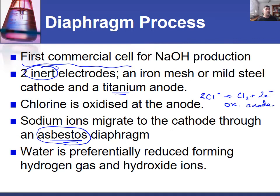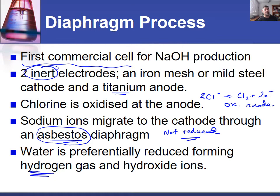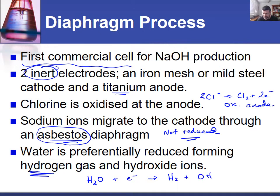Because there was no separation of the two processes this time, both were occurring together. The sodium ions were not being reduced. Instead, it was water — hydrogen from the water — that was being reduced. So we had water molecules gaining electrons to form hydrogen gas and hydroxide ions. Balancing that: two water molecules, two electrons, giving one hydrogen gas molecule and two hydroxide ions.